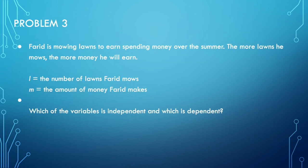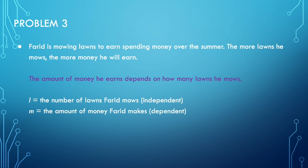Problem three: Farid is mowing lawns to earn spending money over the summer. The more lawns he mows, the more money he will earn. The amount of money he earns depends on how many lawns he mows, so the number of lawns is independent and the amount of money is dependent.